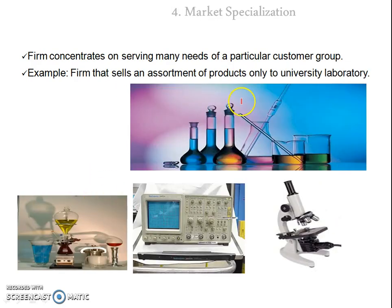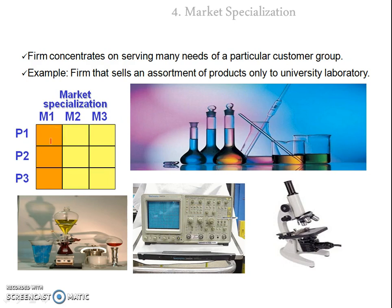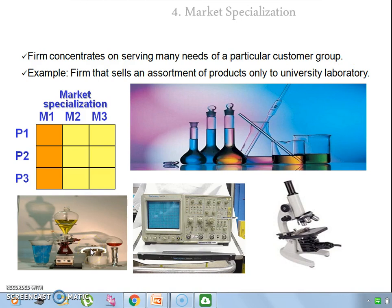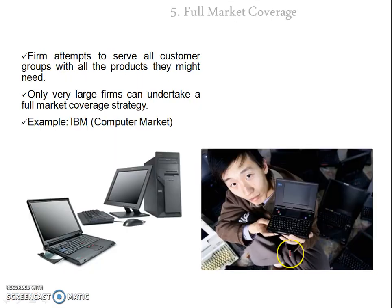The fourth strategy is market specialization. Here the company wants to specialize in a market rather than a product, so they manufacture all types of products for a single market. For example, choosing market M1 and manufacturing P1, P2, and P3 for it. Using the previous example, a company could choose the university laboratory market and manufacture all kinds of lab instruments for university labs — same market, different product types.